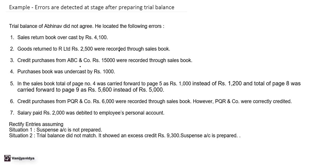The entry for sales return is: Sales Return Account debit, to Debtor's Account. Since the book is overcast by Rs. 4,100, this is a one-sided error — the other effect of the entry is correct. So on the credit side of the sales return account we write: 'By overcasting of sales return book — Rs. 4,100,' which corrects the balance.